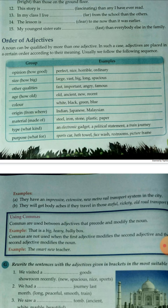Examples for each category: for opinion we can write words like perfect, nice, horrible, ordinary; for size — large, vast, big; for other qualities — fast, important, angry; for age — old, ancient, new, recent; for color — white, black, green, blue; for origin — Indian, Japanese, Malaysian; for material — steel, iron, stone, plastic, paper; for type — electronic gadget, political statement, train journey, sports car; and for purpose — bath towel, face wash, restrooms, picture frame.